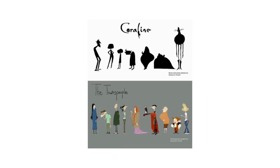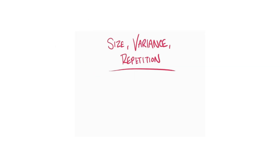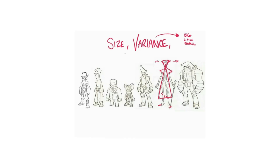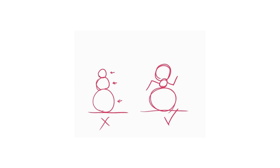Coraline's characters are all based on shapes — the silhouettes are just amazing. Now, something we're going to talk about this week: size and variance in design. Here we have three equally sized circles making a boring snowman. What happens when you start doing something more interesting with them?